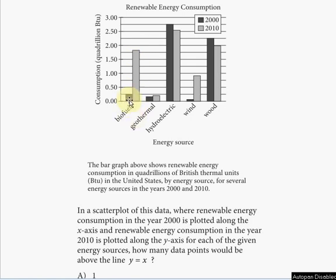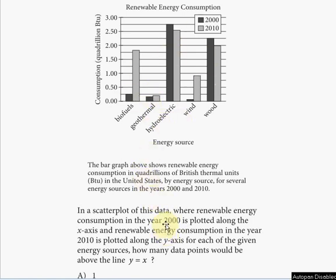The gray bar is the y value and the black bar is the x value. You don't need to do any calculations here. You just need to understand how to transform a bar graph into a graph drawn in the xy plane.